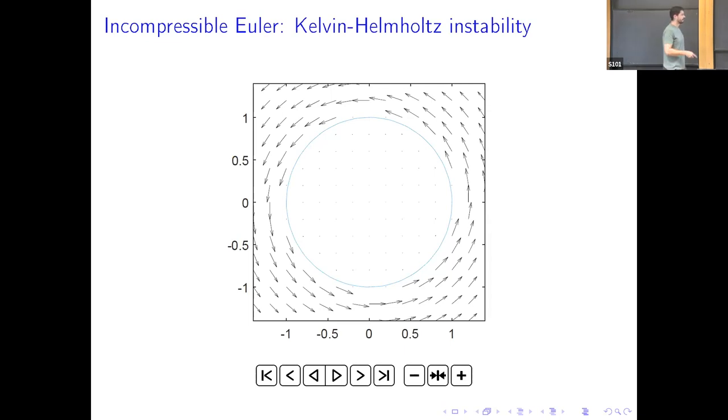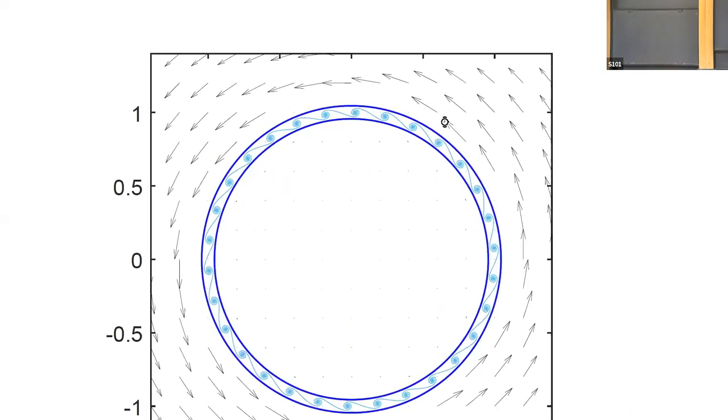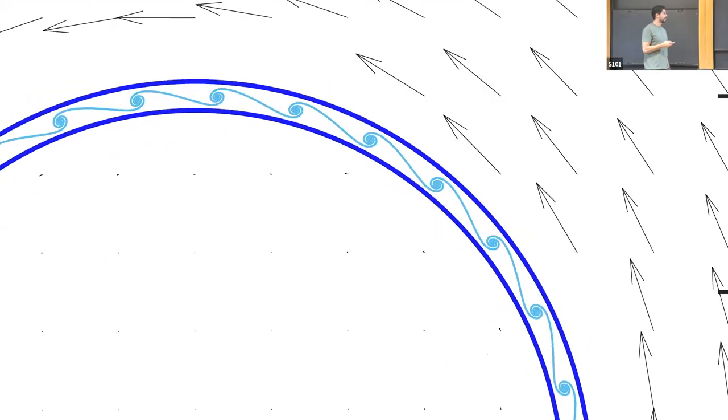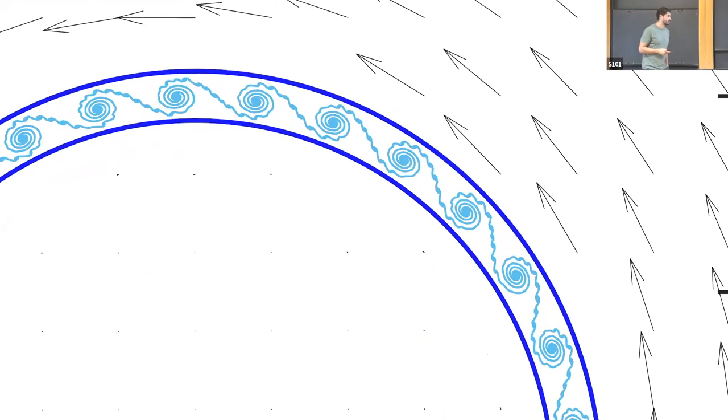But now we can consider a perturbation of this curve of discontinuity. In fact, here there is a tiny perturbation, but maybe you cannot appreciate it. And do some numerics of how this curve of discontinuity evolves. And we can do some here.